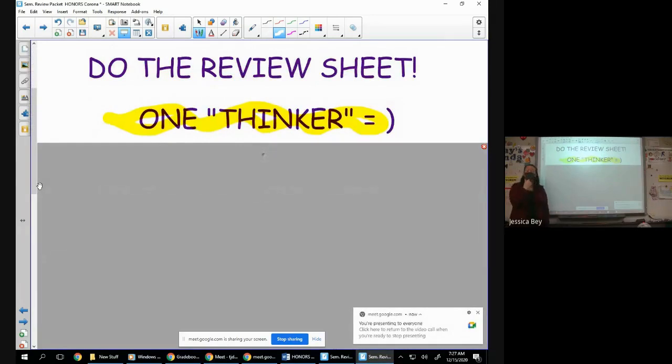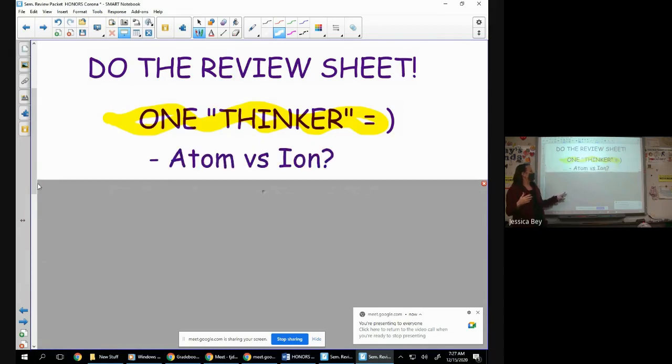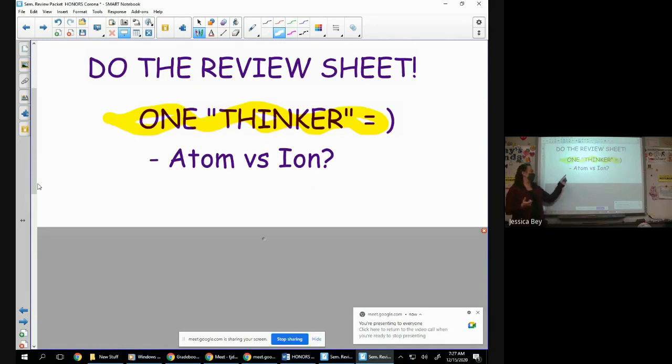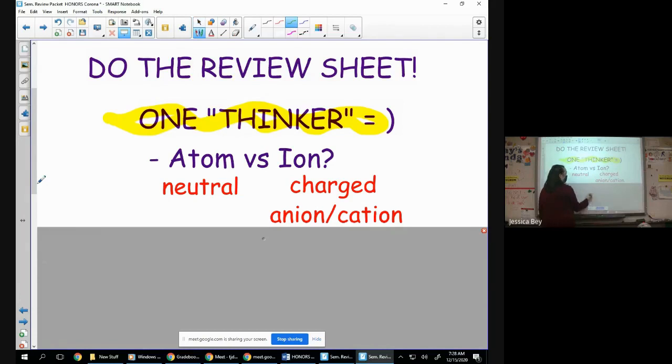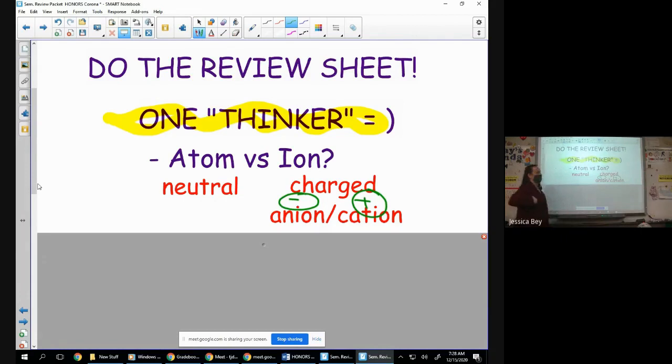There are two things I guess that were not on the review sheet, but they're very easy, but I wanted to point them out if you want to kind of write them on your review sheet as something that we talked about. On your review sheet it talks about cations and anions, but it doesn't necessarily talk about what is the charge of an atom. Does anybody remember the charge of an atom is? Ions are charged and atoms are neutral, very good.